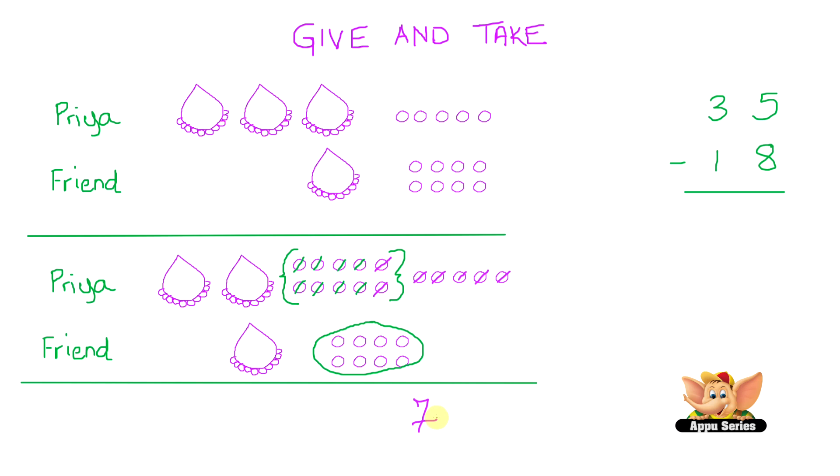Now let's come to the group of necklaces. We have 2 necklaces here. Priya gave away 1 necklace to her friend. We'll scratch out 1 necklace. That necklace is now down here. That's the one that Priya gave to her friend. She's only left with 1 necklace.